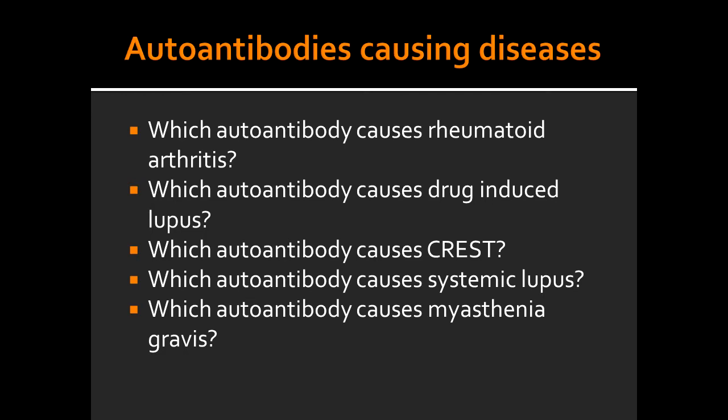Which autoantibody causes rheumatoid arthritis? Rheumatoid arthritis is caused by anti-IgG, which is the rheumatoid factor. Which autoantibody causes drug-induced lupus? Drug-induced lupus is caused by antihistone antibody.